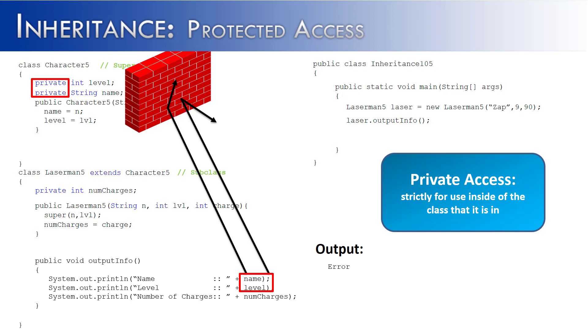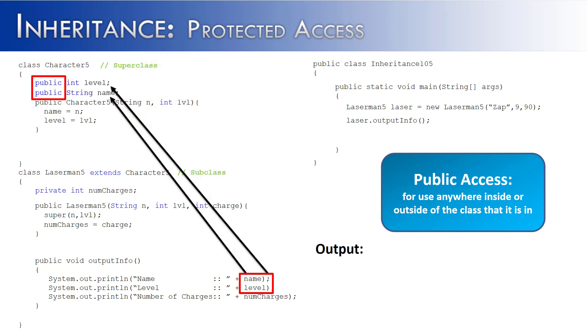So is there a solution to this? Well yeah, instead of using private access, what we could do is use public access for use anywhere inside or outside of the class that it's in. So anybody and their brother can access level and name now. Is this going to fix our problem and allow us to output name and level? Well yes. Because name and level now have access outside of the class, which is public. And so Laserman5 can access them and we would get name zap, level 9, number of charges 90.